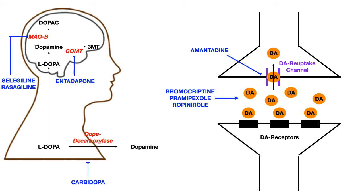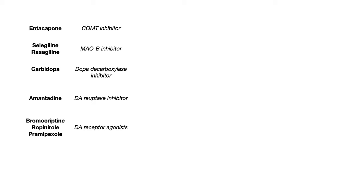Here's a summary of everything we've talked about, along with some mnemonics to help you memorize these different mechanisms. Entacapone is a COMT inhibitor. Both selegiline and rasagiline are MAO-B inhibitors, or monoamine oxidase B inhibitors. Carbidopa is a DOPA decarboxylase inhibitor. Amantadine inhibits dopamine reuptake. And bromocriptine, ropinirole, and pramipexole are all dopamine receptor agonists.